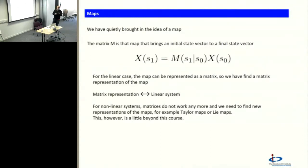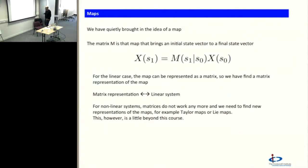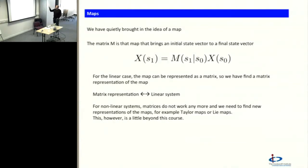So the general feature is: if we have a linear system, we have a matrix representation of the transforming maps of our system. We've represented a quadrupole by a linear map, which we write as a matrix. For a non-linear system, matrices don't work anymore — you have to find new ways of representing this transformation, for example Taylor maps or Lie maps. That's beyond this course, but other Cockcroft courses will start from the linear stuff and find other ways of representing non-linear dynamics like sextupoles and octupoles. But our matrix is a linear map, and we can write it as a matrix.